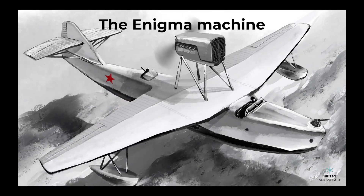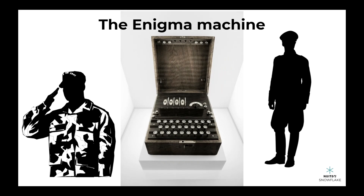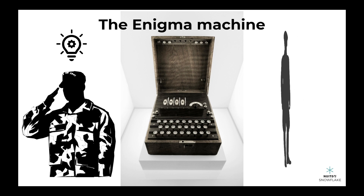But encryption didn't just stay in the ancient world. During World War II, both the Allies and the Axis powers used encryption to send secret messages to their troops. One famous example was the Enigma machine used by the Germans. It looked like a typewriter, but it could encode messages in a way that was nearly impossible to crack. But the Allies were able to figure out how the machine worked and break the code, which helped them win the war.